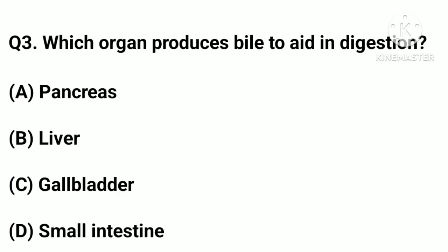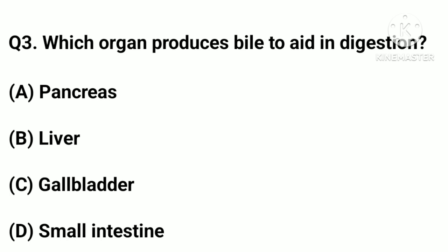Question number three: Which organ produces bile to aid in digestion? Option a: pancreas. Option b: liver. Option c: gallbladder. Option d: small intestine. Correct answer: option b, liver.